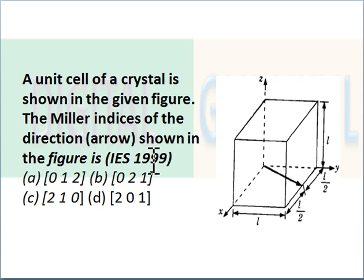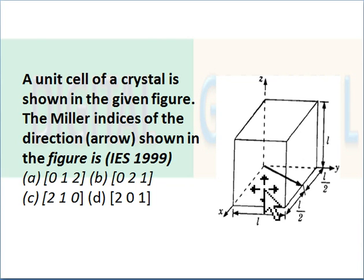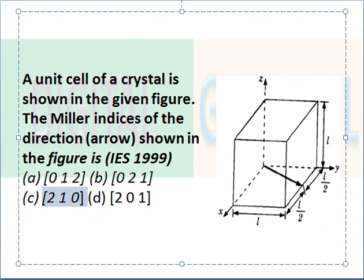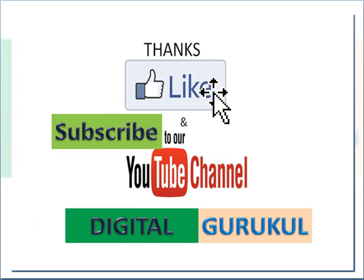The next question is from ESE 1999: an unit cell of a crystal is shown in the figure and you have to find the Miller indices of the direction shown. The x-axis intercept is 1/2, y-axis intercept is 1, and z-axis intercept is infinity. By taking reciprocals you get 2, 1, and 0, so the answer is [2 1 0]. This question was also asked in 2010. I hope you've cleared your doubts. If you like this video, please like, subscribe, and share. Thanks for watching.